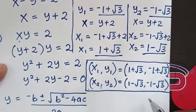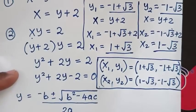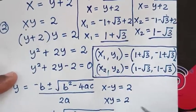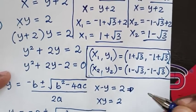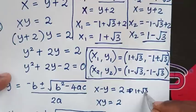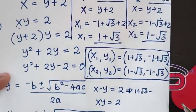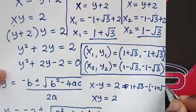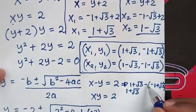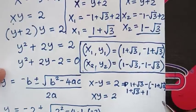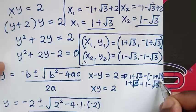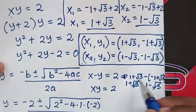Now we check if these solutions are correct by substituting back into the original equations: x minus y equals 2, and x times y equals 2. Checking the first equation with x1 and y1: 1 plus square root of 3, minus bracket negative 1 plus square root of 3 — opening the bracket gives 1 plus square root of 3 plus 1 minus square root of 3. The square root of 3 terms cancel, giving 1 plus 1 equals 2. This is correct.